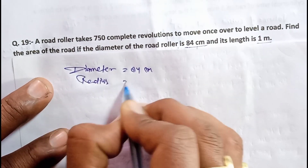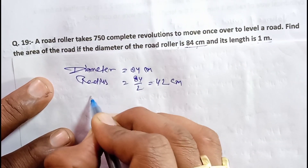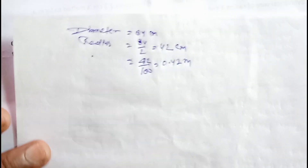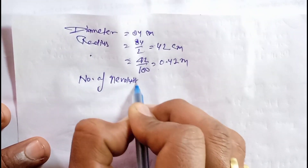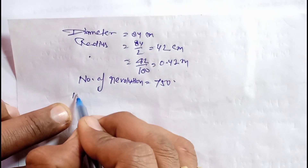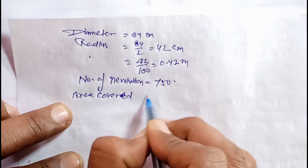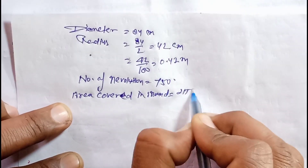Radius = d/2 = 84/2 = 42 cm. Converting: 42/100 = 0.42 meters. Number of revolutions = 750. Now we find the area covered in one revolution.